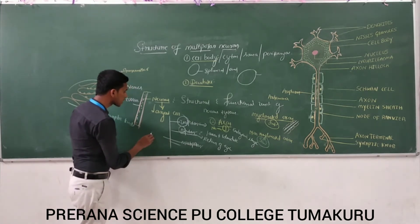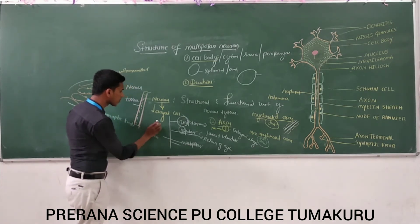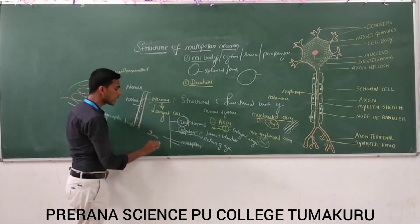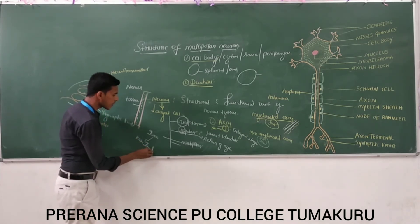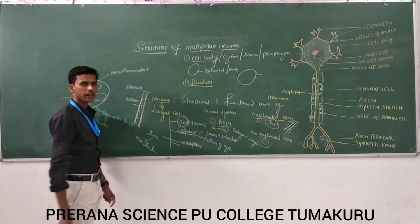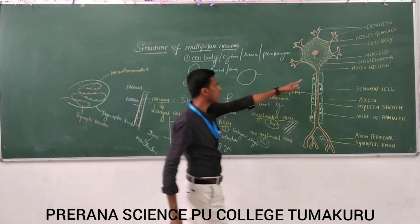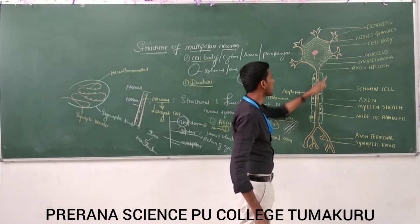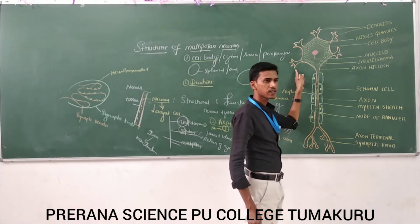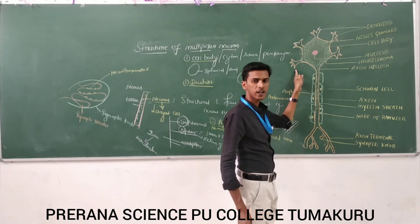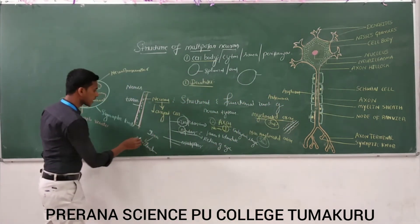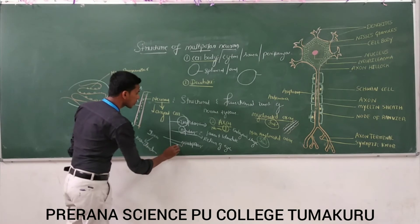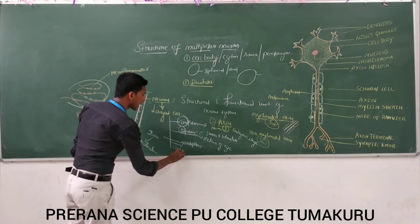And the multipolar neuron has one axon and many dendrites — as shown in the diagram. It has one axon and many dendrites. The multipolar neuron is found in the cerebral cortex.